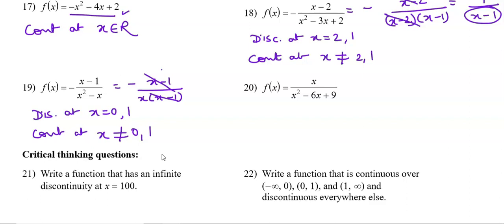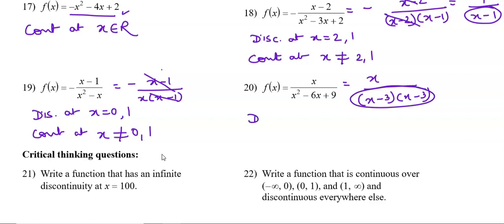Question number 20: the function is x over (x-3)(x-3). There is no common factor so no removable discontinuity. There is infinite discontinuity when the denominator becomes 0 — at x = 3. So it is continuous at all values except x = 3.